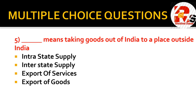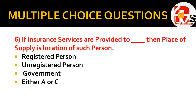Fifth question: blank means taking goods out of India to a place outside India. If we look at this, taking goods outside India is called export of goods. So export of goods is the right option for question number five.